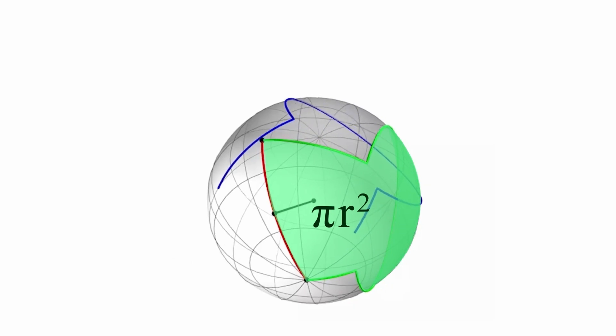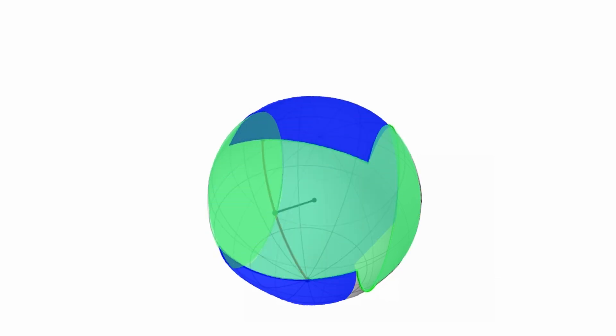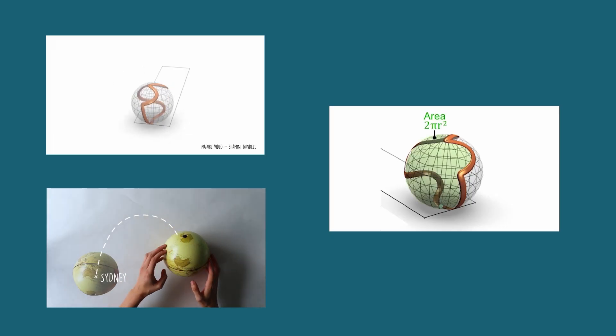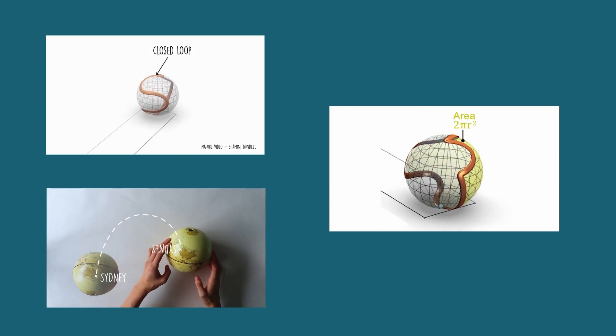Now here's the clever bit. If we rotate that one period path 180 degrees on the surface of the sphere around our great arc, we end up with a closed loop two period path that encloses exactly half the surface area of the sphere. In other words, the mathematical conditions for a trajectoid have been fulfilled.